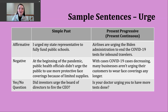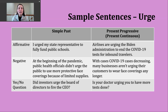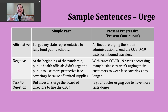If you've been traveling internationally, you might know that to come back into the United States after being abroad, many travelers are required to have a negative test within so many hours of their departure. Airlines want more people to travel, so they are advocating for the end of this particular policy. To make a negative present progressive sentence, we use a present form of be — am, is, or are — then not, then the -ing form. For example: with COVID-19 cases decreasing, many businesses aren't urging their customers to wear face coverings any longer.